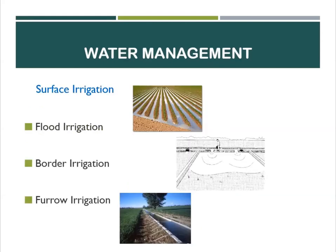In surface irrigation, we will discuss three things. First is flood irrigation, where water enters the area uncontrolled and minimal land preparation is required. Second is border irrigation, where water enters the area as a controlled sheet of water, resulting in less water loss than flood irrigation. Lastly, furrow irrigation is where water is directed into shallow channels that can be constructed using ordinary farm machineries, such as siphon tubes.